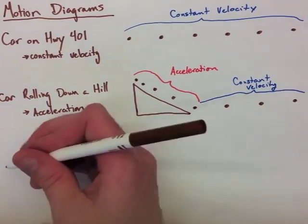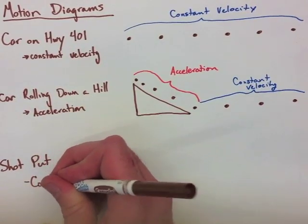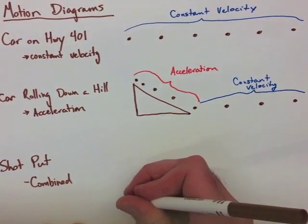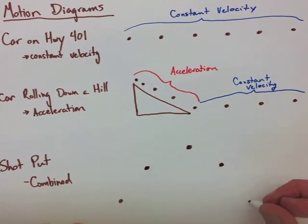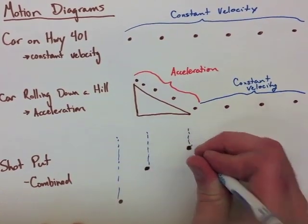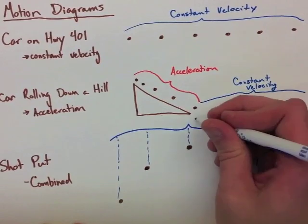The last example we'll look at has both constant velocity and acceleration, however they're in different directions. We're throwing a shot put, which is going up and then coming back down. If we consider the x component, we look and see that the dots are equal distance apart, representing constant velocity. This is because we don't have any acceleration in the x direction.